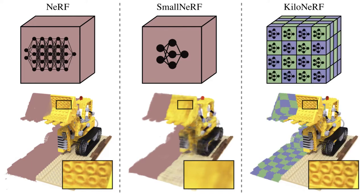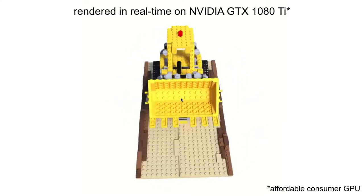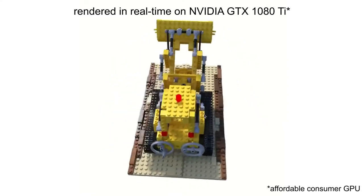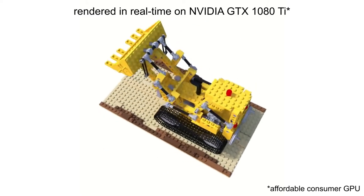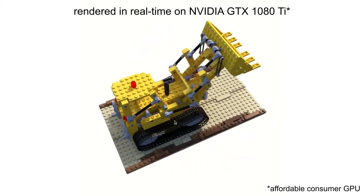Instead, we adopt the following strategy. We first subdivide the scene into a coarse voxel grid and then assign an independent network to each voxel cell. Since each of these networks only represents a fraction of the scene, tiny networks suffice that are very fast to evaluate. When combined with standard optimization techniques, our KiloNERV representation enables real-time rendering.